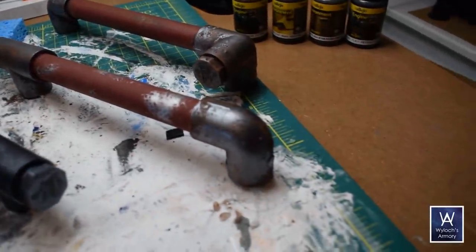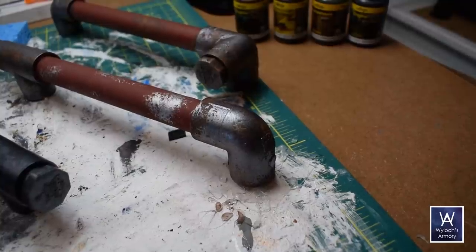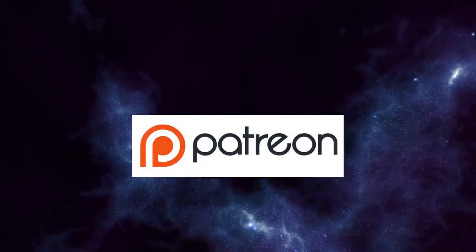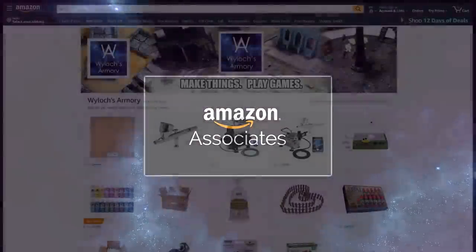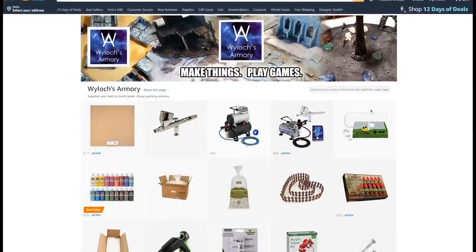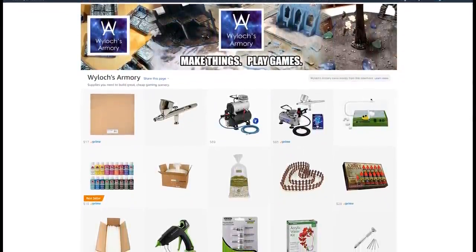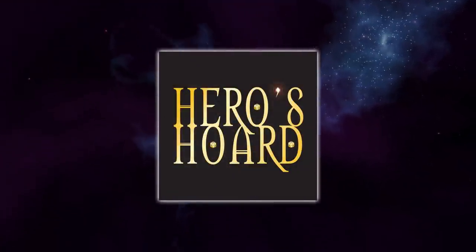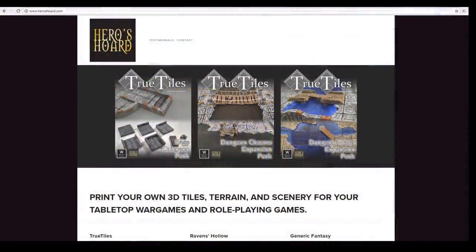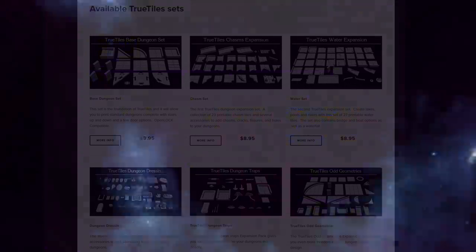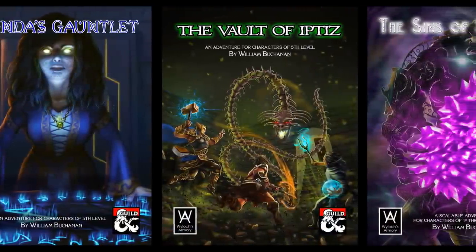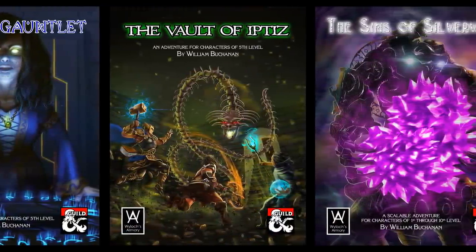There are multiple ways to support the channel if you find the content helpful. Number one, like, subscribe, reminder bell. Number two, Patreon, Wylock's Armory. Number three, Amazon affiliate links. Just use the links in the video description below when you buy stuff. Totally transparent to you, the only difference is I get a small commission. Number four, Heroes Horde. For you 3D printers out there, tons of selection, including all True Tiles lines. And number five, my modules on the DMs Guild, written for D&D 5th Edition. They're pretty good. Not great, but, you know, good.